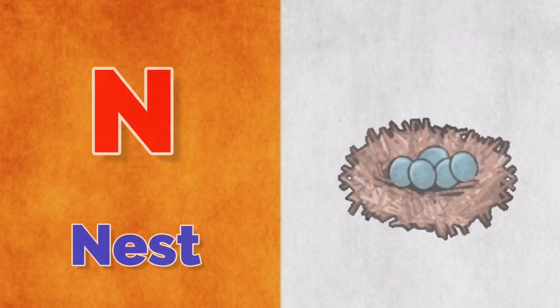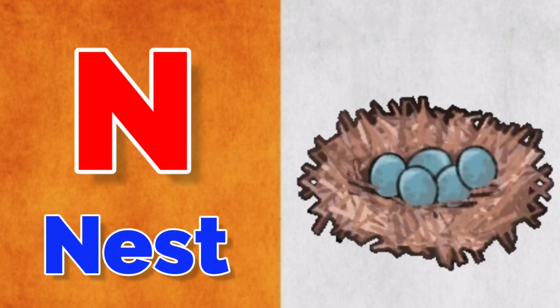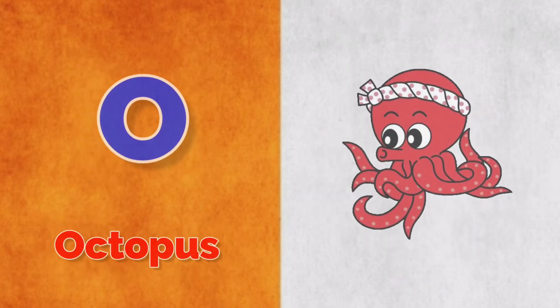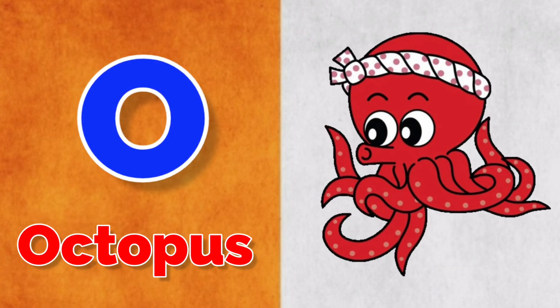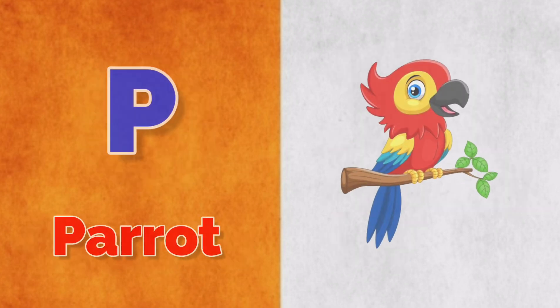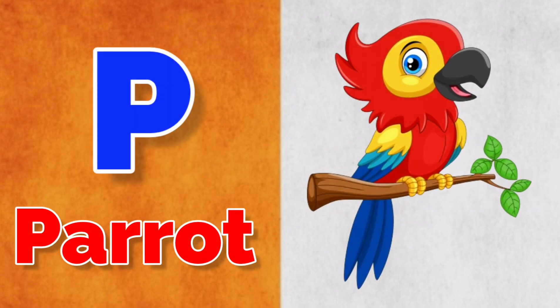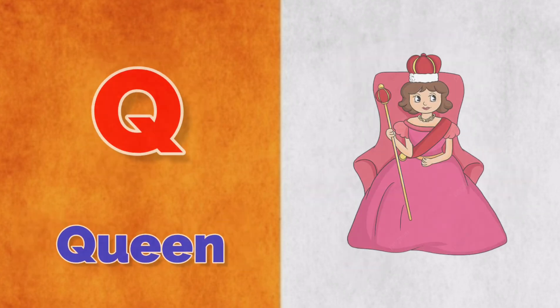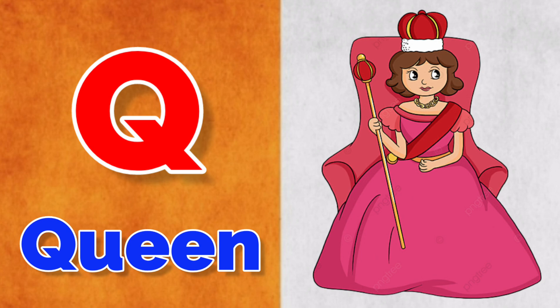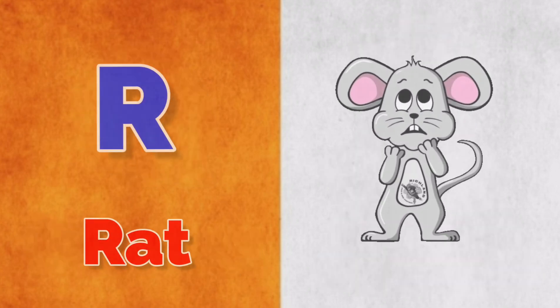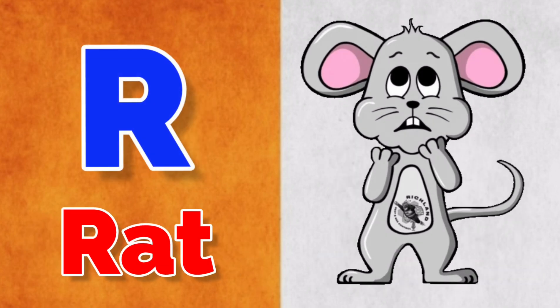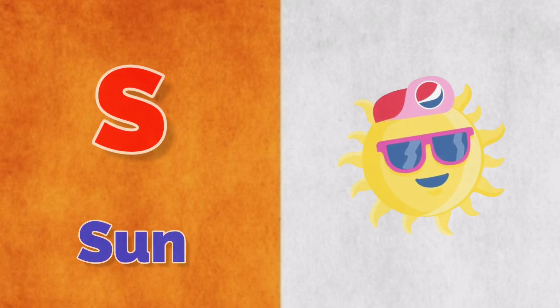M for monkey, N for nest, O for octopus, P for parrot, Q for queen, R for red.